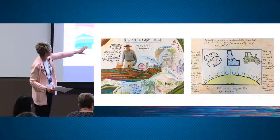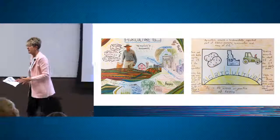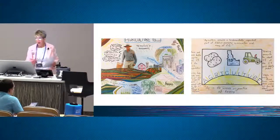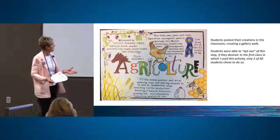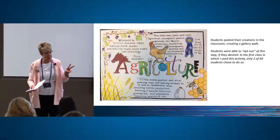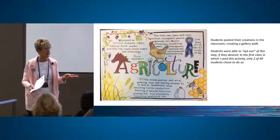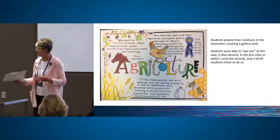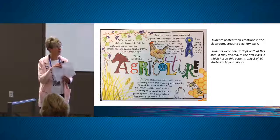One student on the left used one magazine image and words to define fields, orchards, fisheries, livestock, oceans, and rivers. She included the economy, society, politics, and environment — ESPE: Economic, Social, Political, and Environmental impact. She remembered that from a class discussion. Another student — obviously a potato farmer from Buhl, Idaho — wrote 'Ag is the science or practice of farming' with statistics.